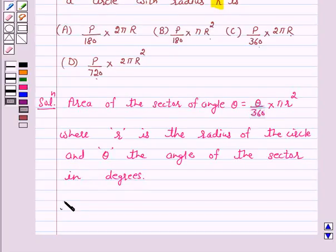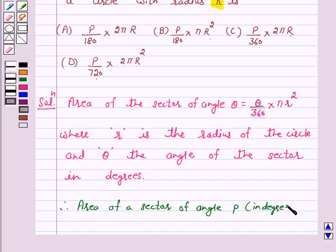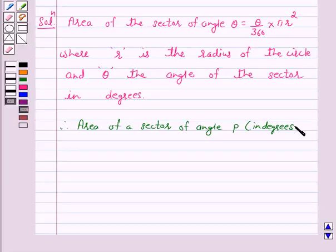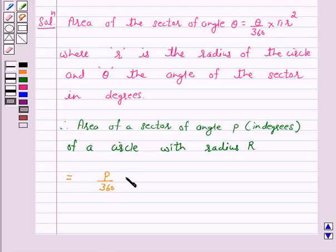Therefore, the area of a sector of angle P in degrees of a circle with radius R is equal to P upon 360 into πR².